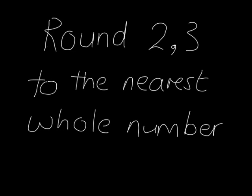If we're asked to round 2.3 to the nearest whole number, what we're actually asking is which whole number is closest to 2.3? To do this, we first need to be sure we know what the whole numbers are. OK, so the whole numbers are as follows.